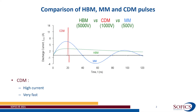First, CDM is a test standard for packaged ICs and not for ESD protection clamps measured separately. Second, the CDM current is a function of the IC's capacitance to ground. The package type and size does have a major influence on it.